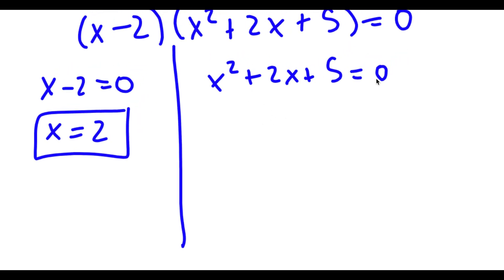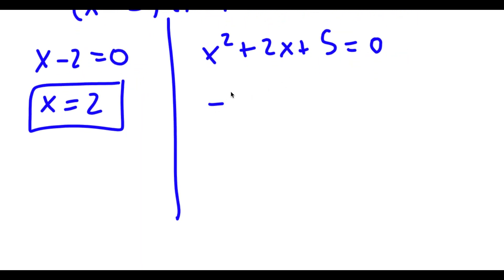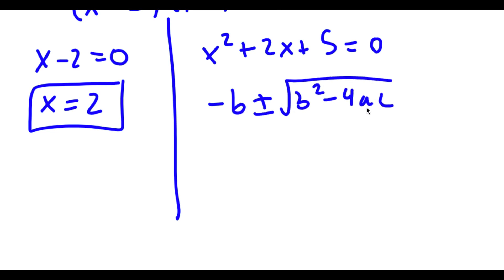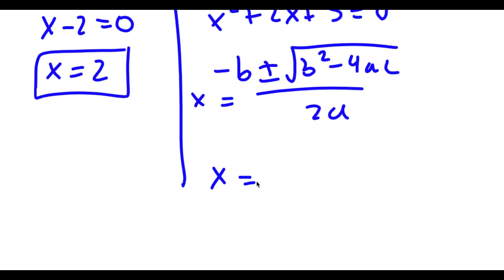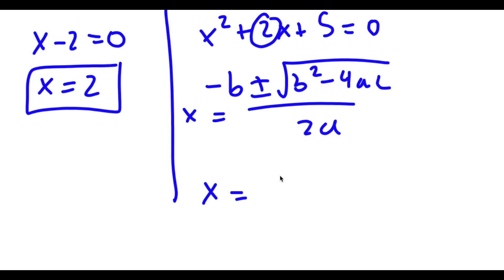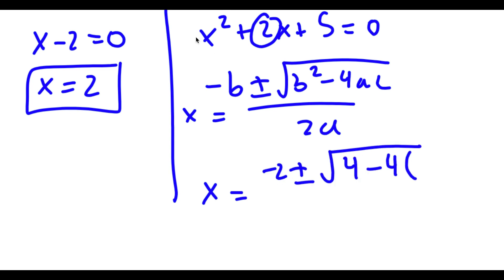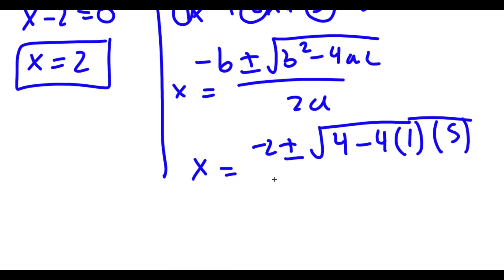And for x squared plus 2x plus 5 is equal to 0, I can use the quadratic formula, which is negative b plus or minus the square root of b squared minus 4ac all over 2a. So in this case, b is equal to 2. So I have negative 2 plus or minus the square root of 2 squared, which is 4, minus 4 times a, which is 1, times c, which is 5, all over 2a, so 2.